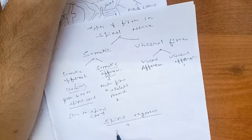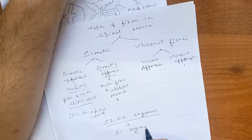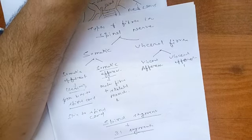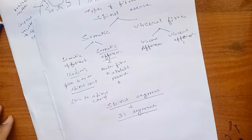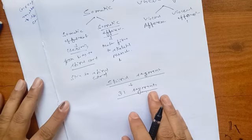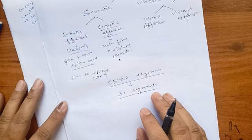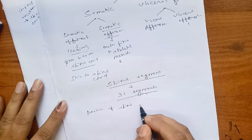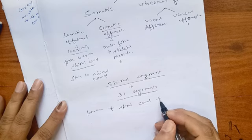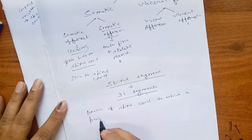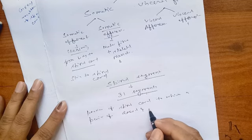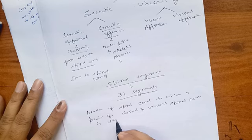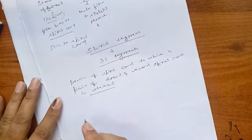Just like the 31 pairs of spinal nerves, there are 31 spinal segments. A spinal segment is a portion of the spinal cord to which a pair of dorsal and ventral spinal roots is attached.